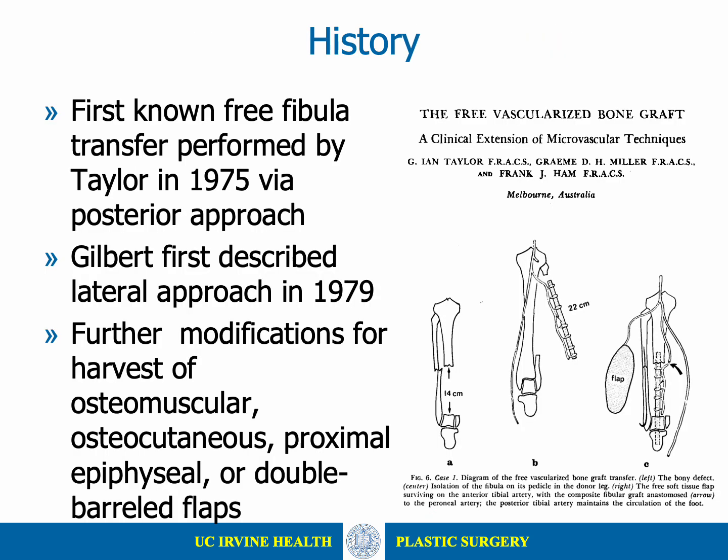While a pedicled fibula flap was first performed for ipsilateral tibial reconstruction in 1905, Taylor is credited as having performed the first free vascularized fibula flap in 1975 to reconstruct a contralateral tibial defect. Gilbert then modified the surgical approach in 1979 to a lateral approach to harvest, which is today the most commonly used method. Other described modifications of the flap include the harvest of osteomuscular, osteocutaneous, proximal epiphyseal, or double-barreled flaps.